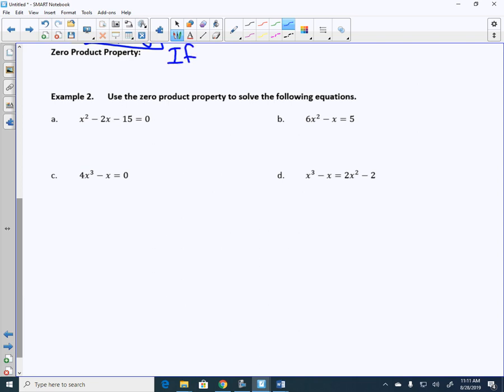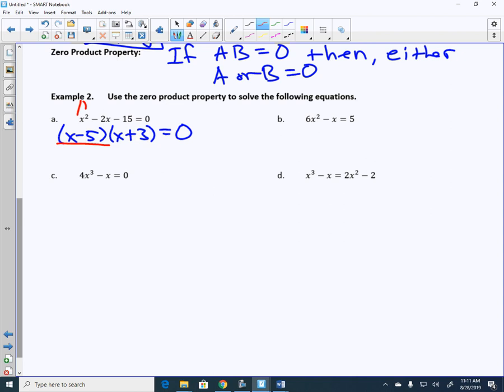Zero product property. If A times B is equal to zero, then we know that something is true. Sometimes a case that maybe solving equations from a linear fashion doesn't always work as well. Maybe we have higher degree equations, say two or three. We use the zero product property. Zero product property just follows logic, which says if you have two things to multiply to give you zero, then we know something is true. What's that something we know is true? Either A or B is zero.